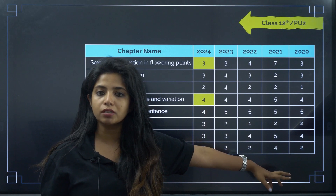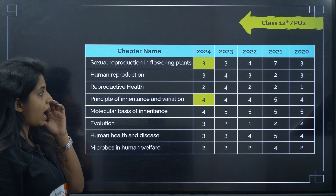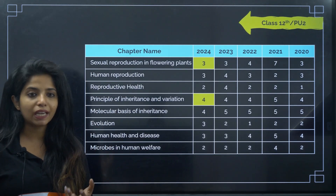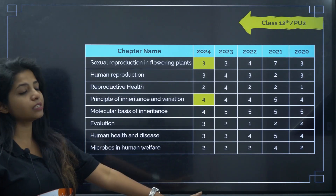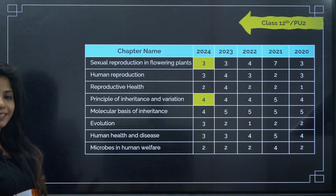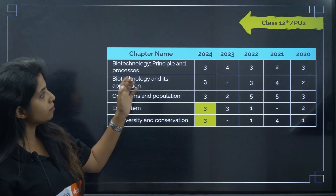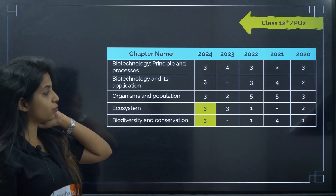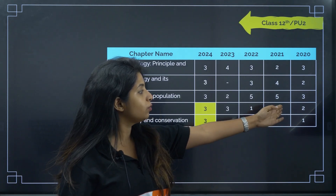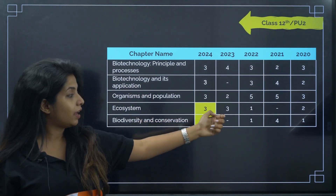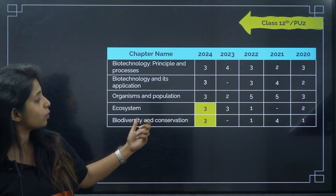'Microbes in Human Welfare' was just 2 questions in 2020 but went up to 4 in 2021. This is a snip you might not find everywhere, so if you're preparing for KCET, definitely take a screenshot. Moving to all 12th grade chapters — ecosystem and biodiversity and conservation had almost no questions in 2021.